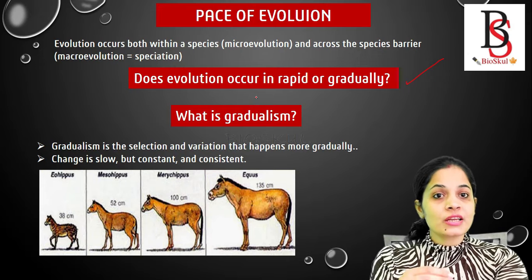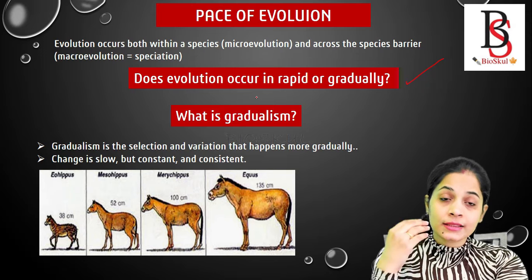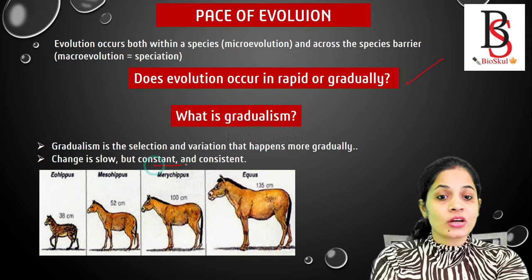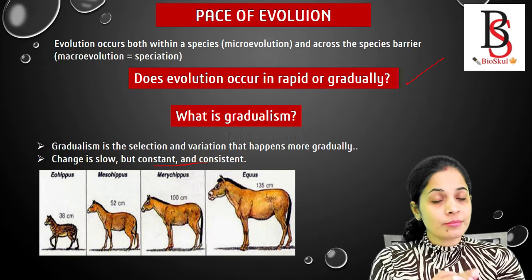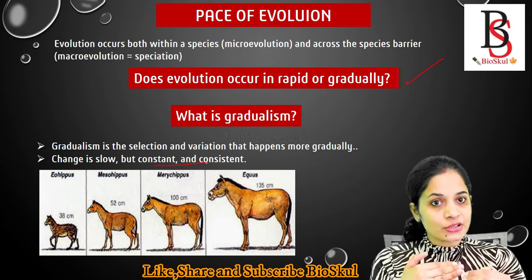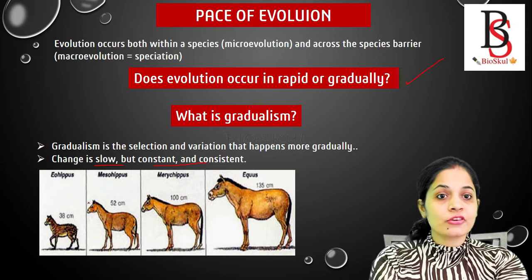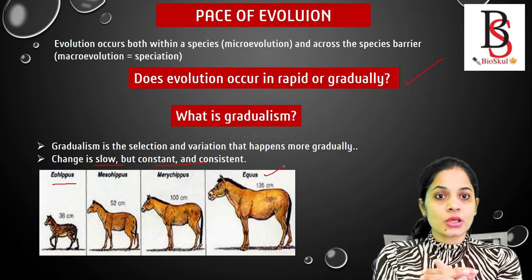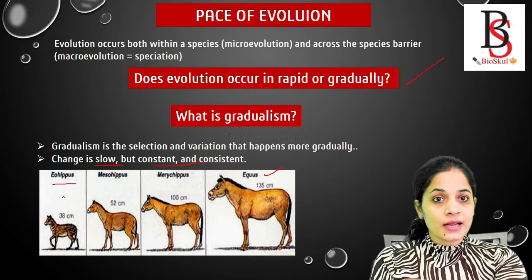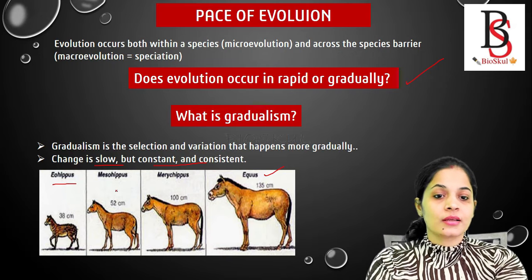Gradualism is the variation or selection that occurs gradually, but the changes are constant and consistent. The changes occur slowly but in a steady, consistent manner — that is known as gradualism. For example, look at the evolution of the horse: the Eohippus gradually changed and evolved into the modern horse, Equus. The changes occurred gradually but constantly.